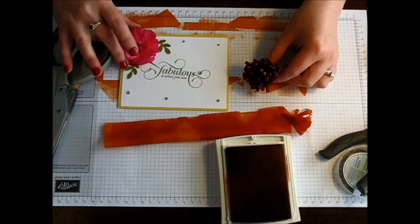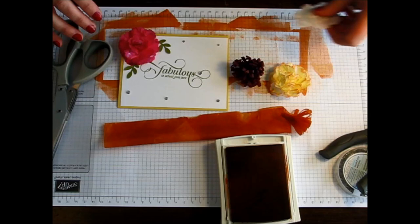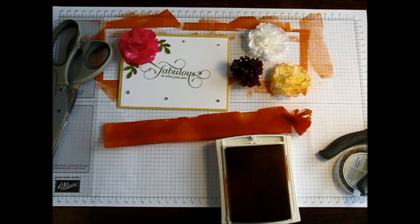So those are just a few of the ways that you can use your crepe filter paper. Of course, there's many other types of flowers that you can use with other punches, scallop punches,